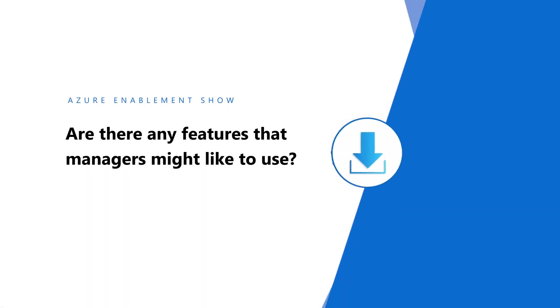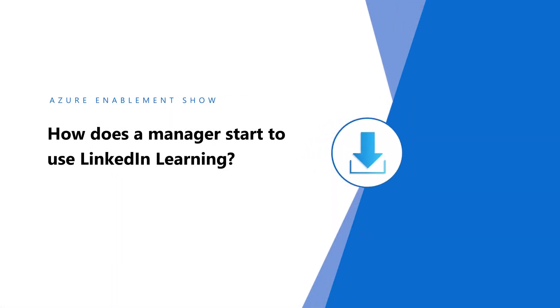Are there any features that managers might like to use? Managers can assign learning paths directly to their employees. From there, they can also monitor and pull analytics of what their employees have been learning on LinkedIn Learning. How does a manager start to use LinkedIn Learning? As a manager, you'll find learning paths that will help you develop your own skill sets as well as the skill sets of your employees. You can filter on specific skills that you're looking for within a learning path.